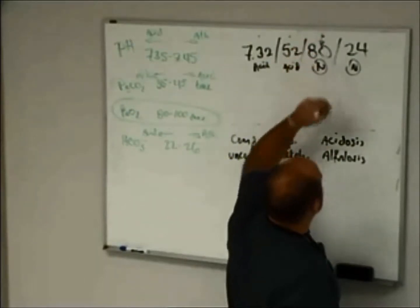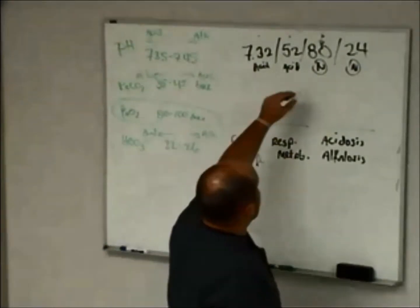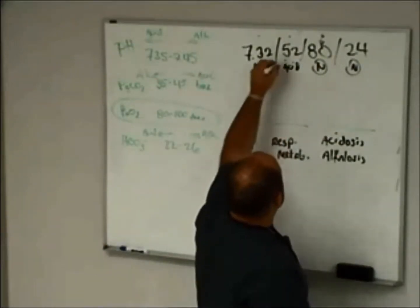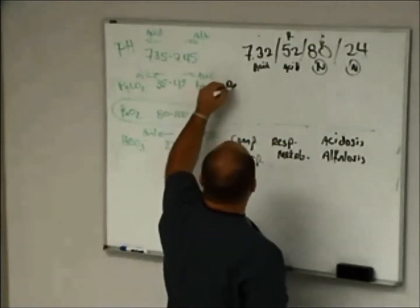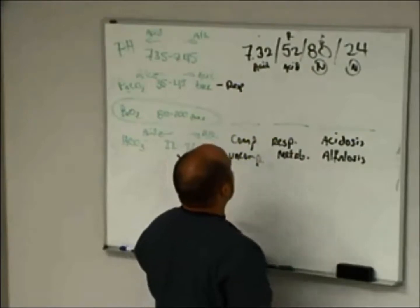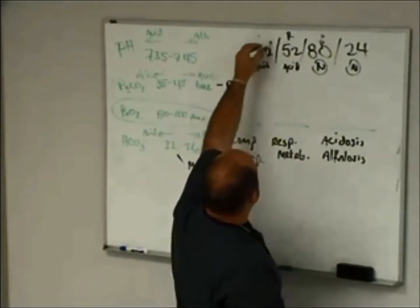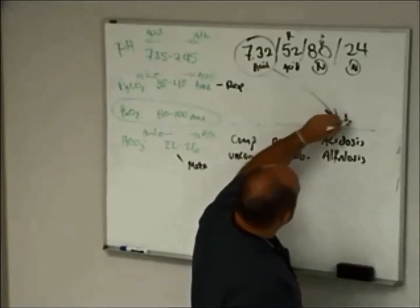And this is normal, but remember this is the PaO2. Doesn't have much to do with the acid-base balance. So in this case, you're going to see this is the respiratory component. You always think of CO2 as respiratory, and the bicarb is always the metabolic. So we know we have an acidosis because whatever this is goes right here.